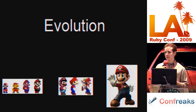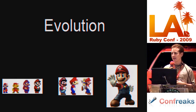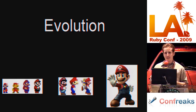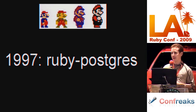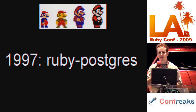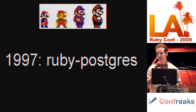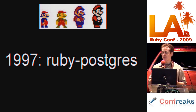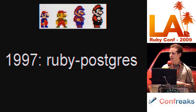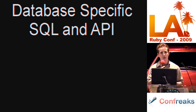To understand Sequel's purpose, we need to talk about the evolution — specifically the evolution of database access in Ruby. In the beginning, Ruby had no database adapters. But after a while, people wanted to use Ruby to interact with SQL databases, so they wanted adapters for each database, such as a Ruby Postgres adapter, originally written by Matz himself. These adapters allowed programmers to use Ruby to increase their productivity, but they had a few shortcomings.